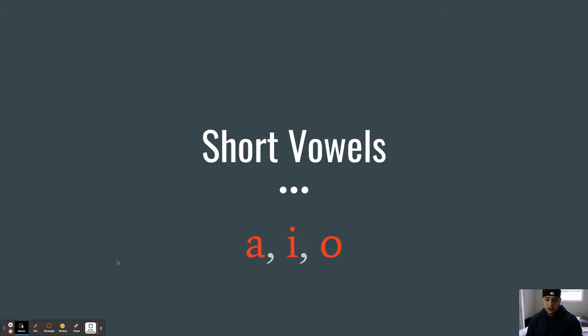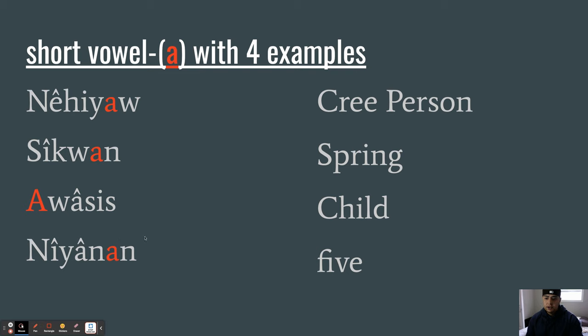Let's get started right into the first slide, which is short vowels. These short vowels are A, I, and O. This first slide will demonstrate the A sound, the short vowel, with four examples. The first one: Nêhiyaw, Cree person. Really listen to these Cree words and the sound the A makes. Nêhiyaw, Cree person; Sîkwan, spring; Awâsis, child; and Niyânan, five.